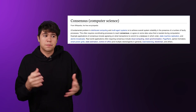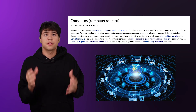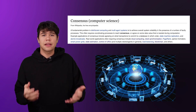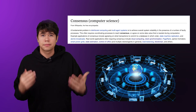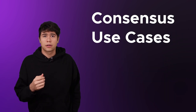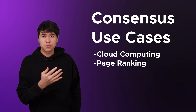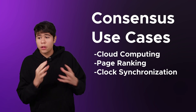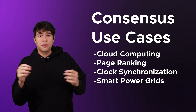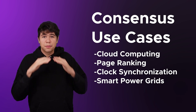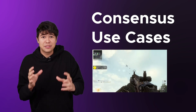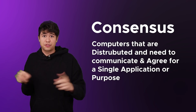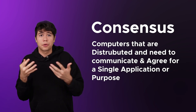These distributed systems of computation are basically the idea that we have all these computers we want to connect together to focus on a certain task. These basic ideas of how computers are networking is the basic idea of the internet, and is why consensus is used everywhere besides just blockchains. Some examples include cloud computing like AWS, page ranks like what Google uses, clock synchronization which keeps all our computers in sync on time, smart power grids, and UAVs — unmanned aerial vehicles — those need consensus protocols as well.